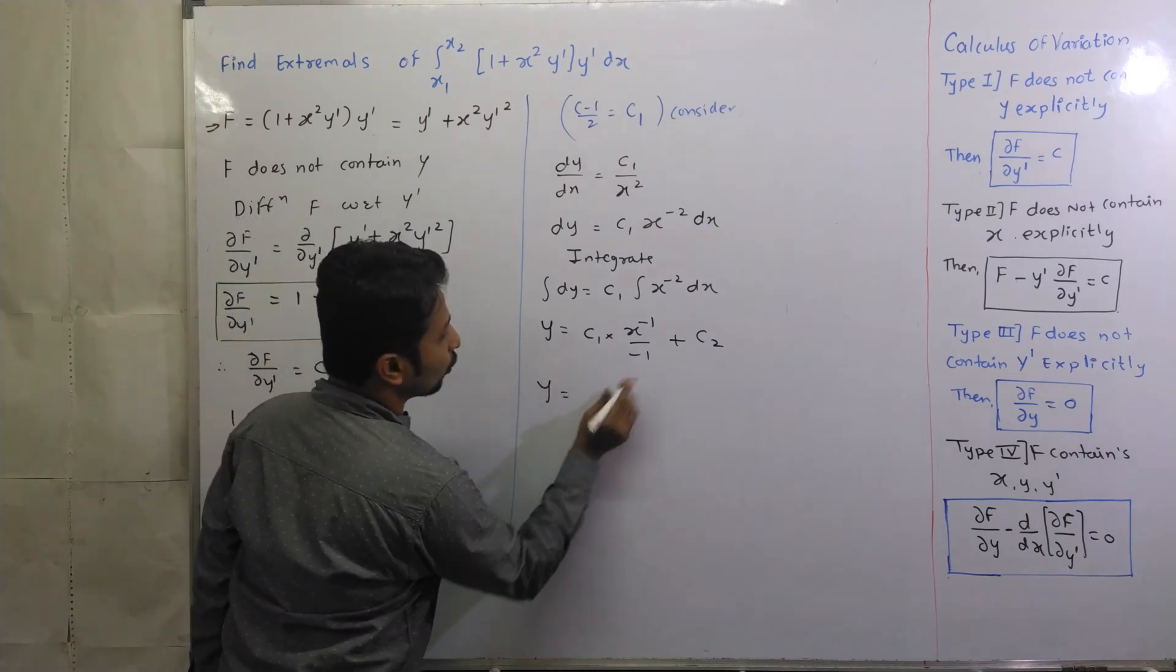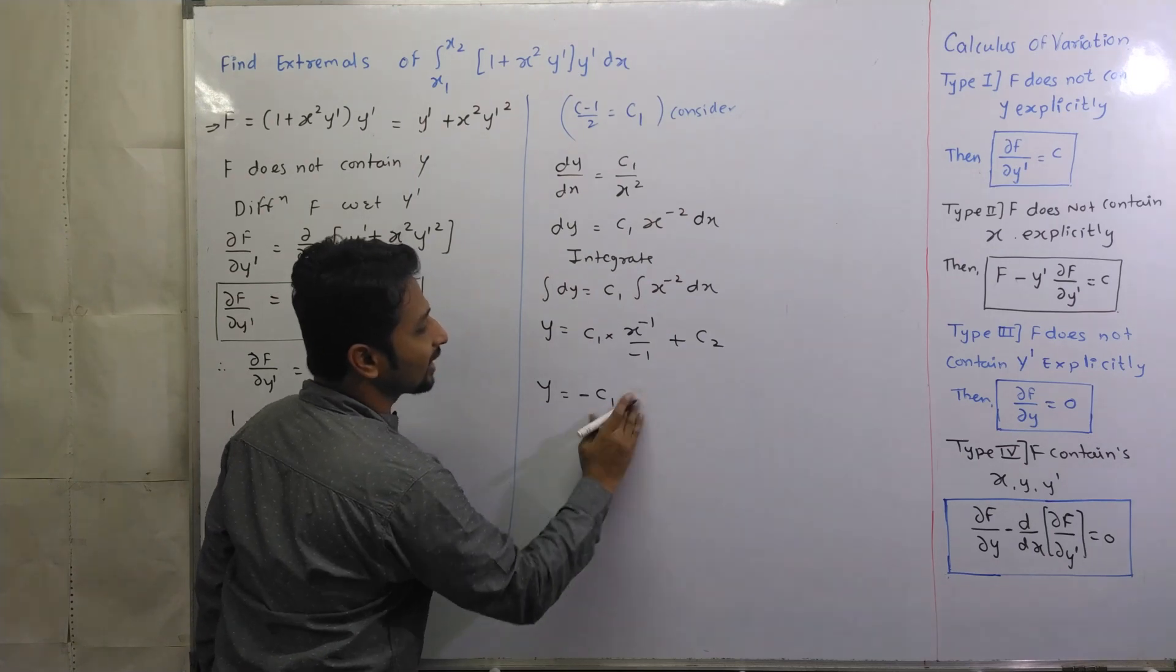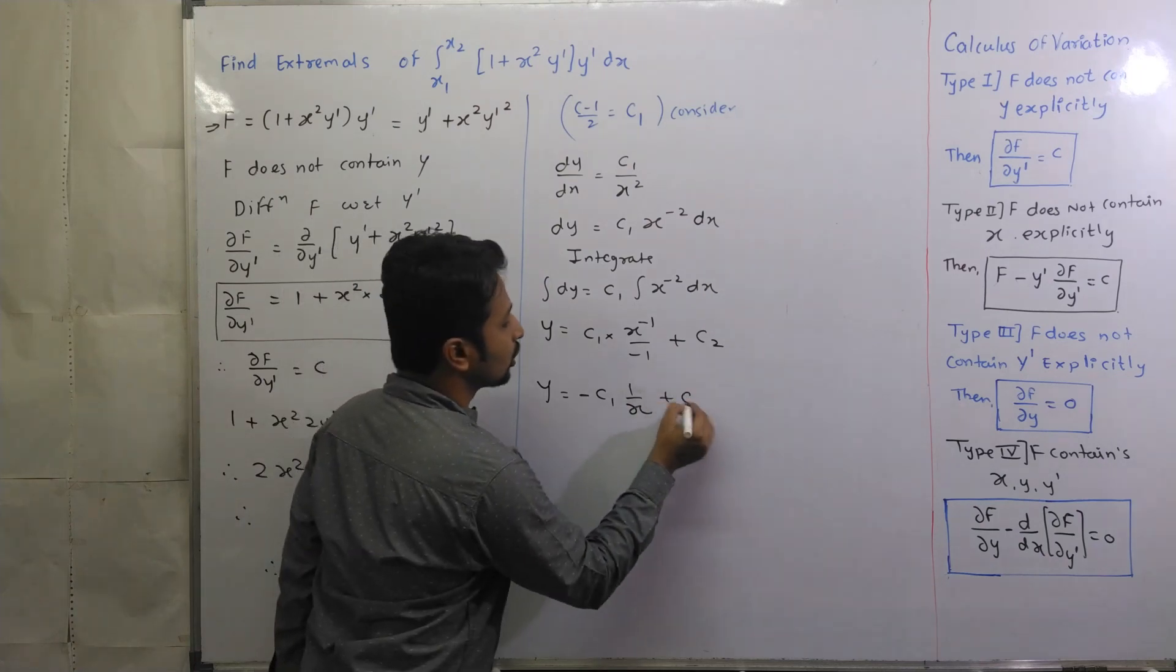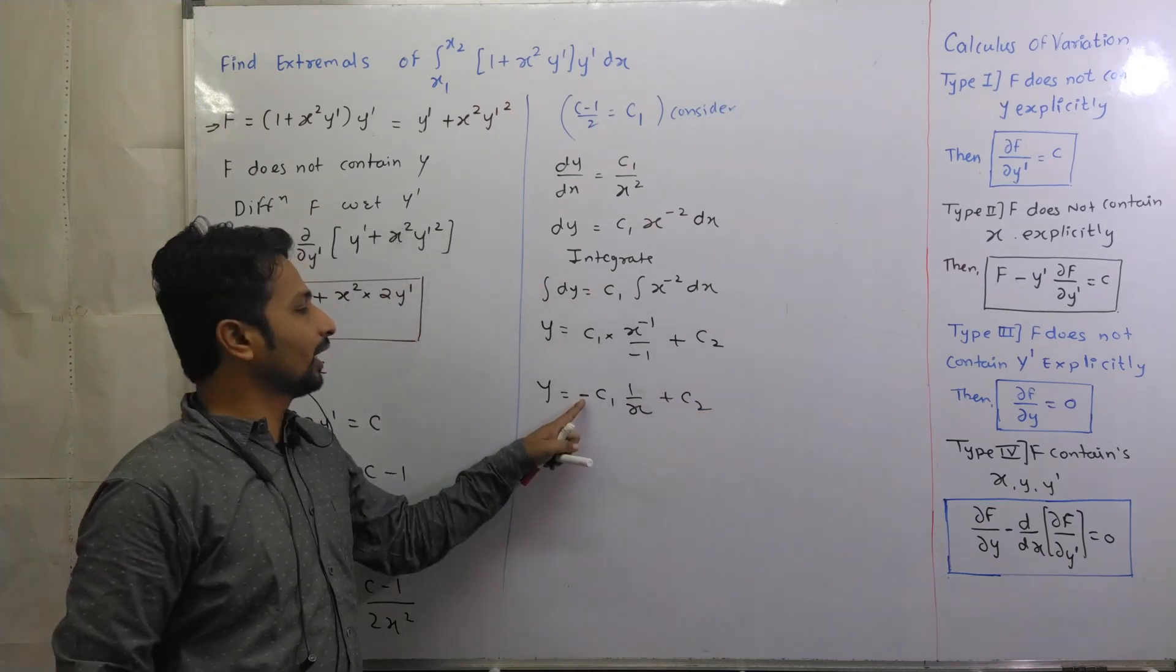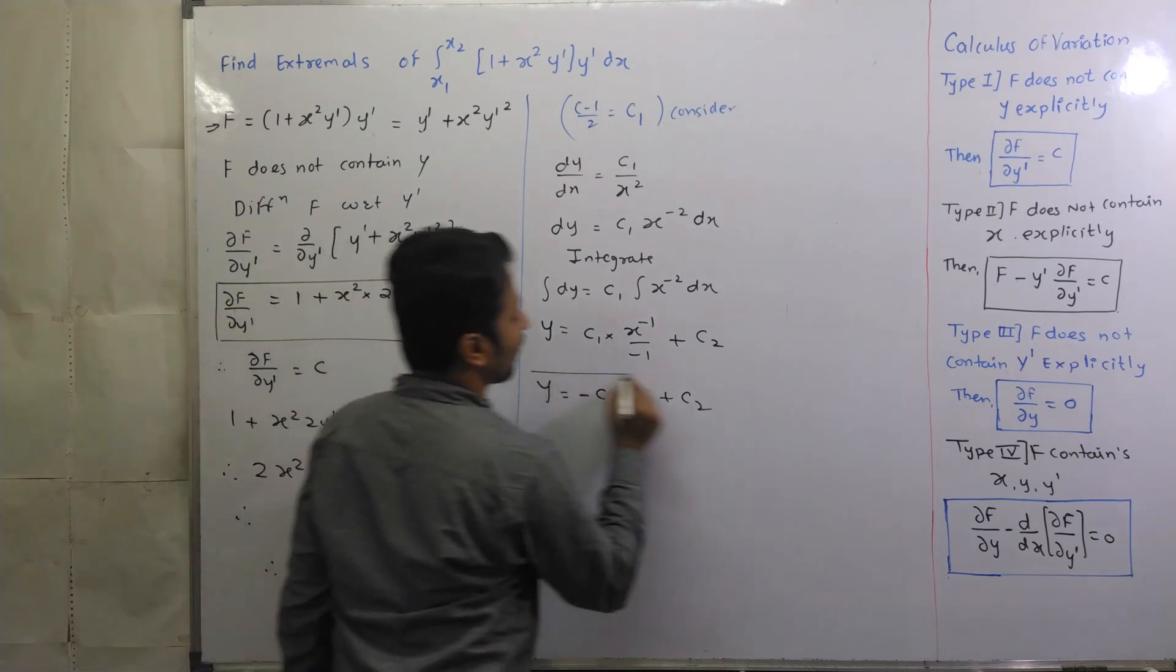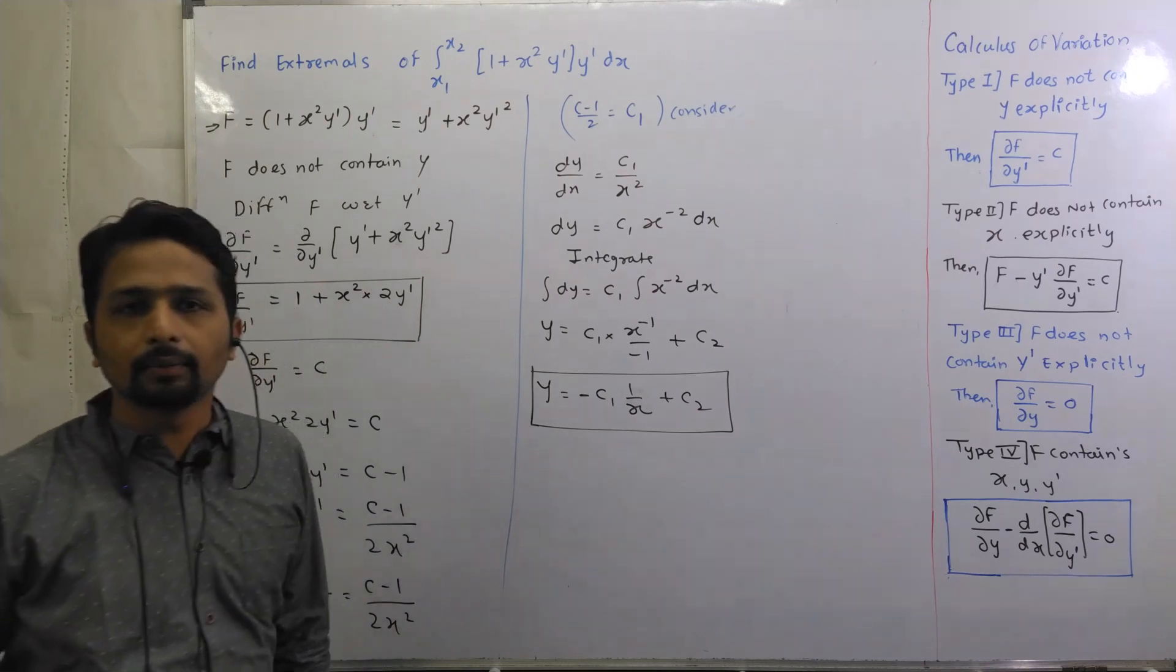Plus another constant c2. So y is equal to minus c1 x inverse, x inverse is 1 upon x, plus c2. You can consider minus c1 as another constant. Or else, here is our final answer. Okay?